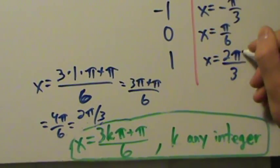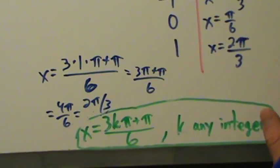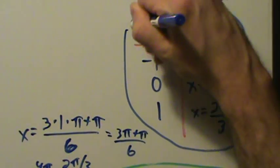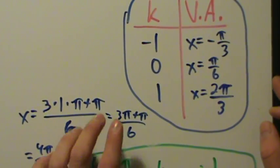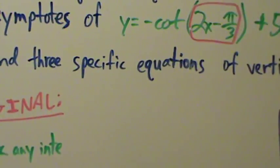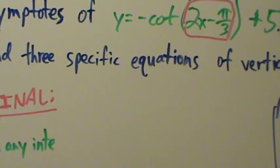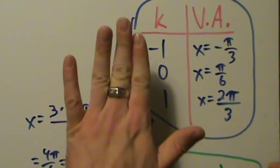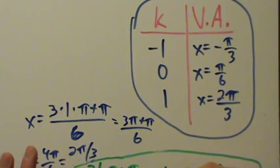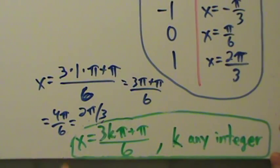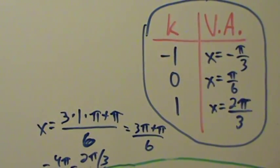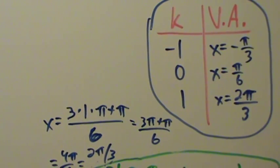That's it for example 2. We found the general equation, and then we found three specific equations by plugging in three specific values of k. For the specific equations part, there are infinitely many possible answers since k is any integer, but we only had to pick three, and it's best to keep the values simple.